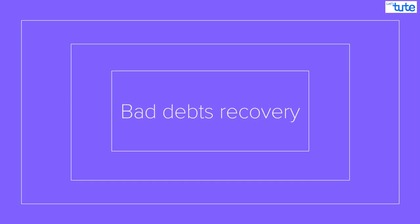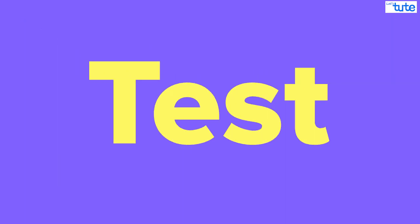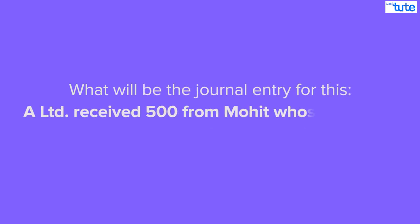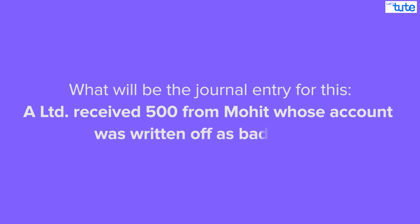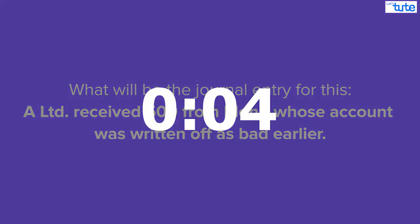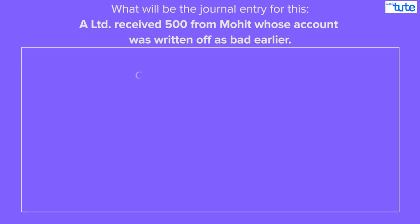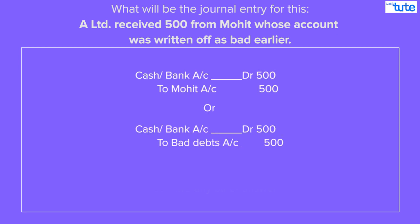Now before starting with today's session, we would like to ask you a very basic question related to bad debts recovery. So let's test our knowledge. What would be the journal entry for this? A Limited received 500 from Mohit whose account was written off as bad earlier. We will give you 5 seconds to think. Is your answer cash/bank account debit to Mohit account? Or did you think cash/bank account debit to bad debts account? Or do you have any other answer?